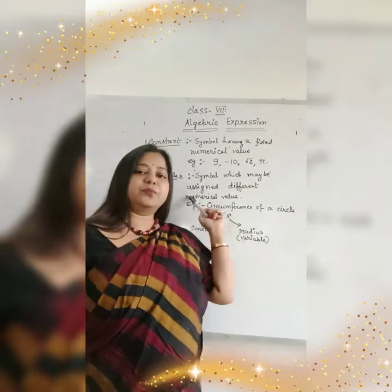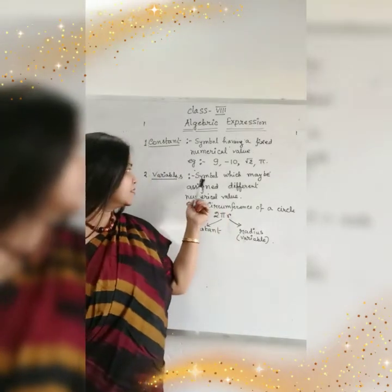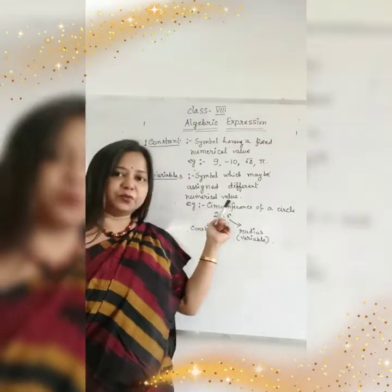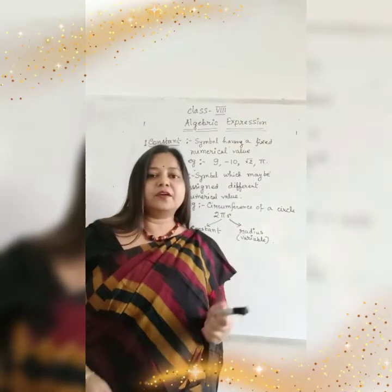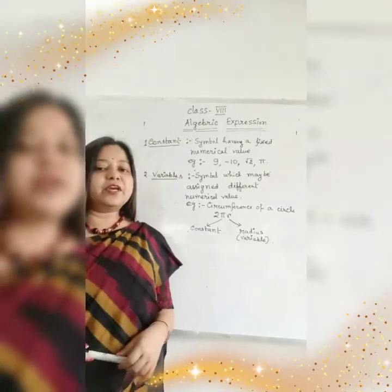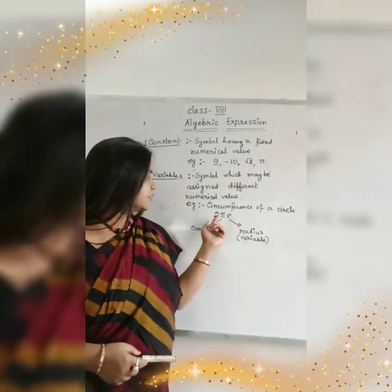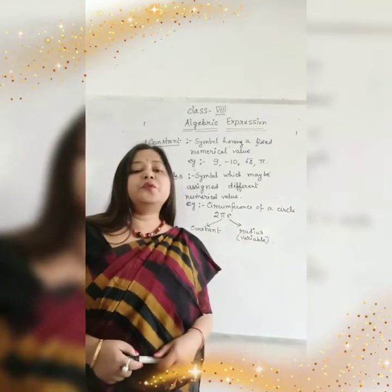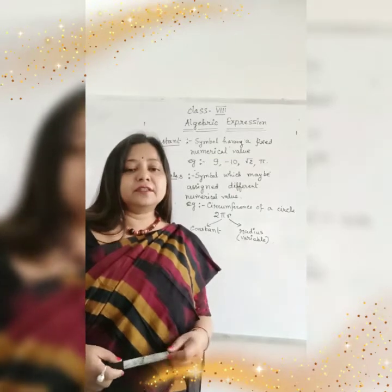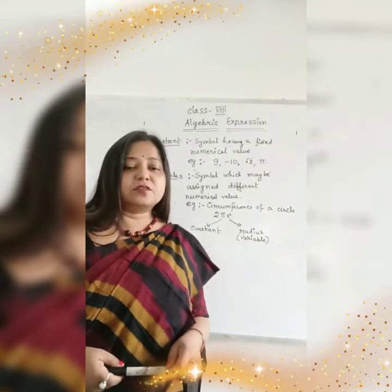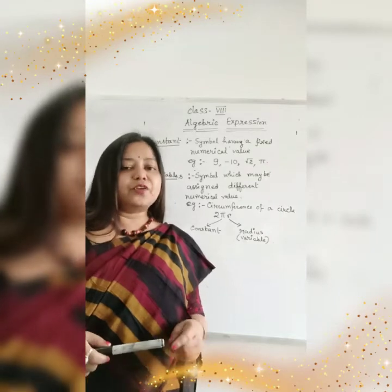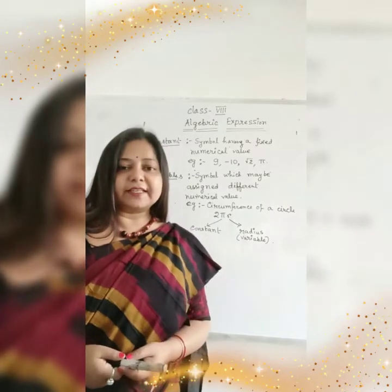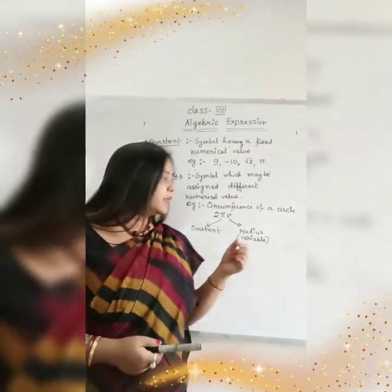In this board, variable means a symbol which may be assigned different numerical values. To understand this, suppose I take 2πr. We know that 2πr means the circumference of the circle, which we have learnt in our previous classes — that the circumference of the circle is 2πr.